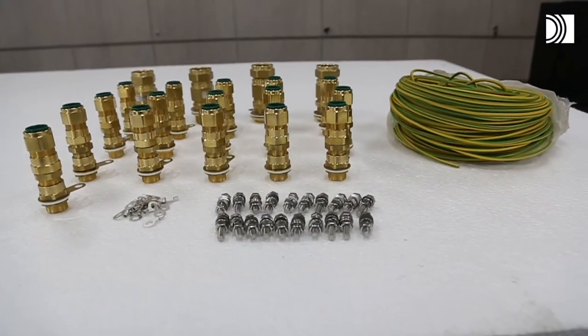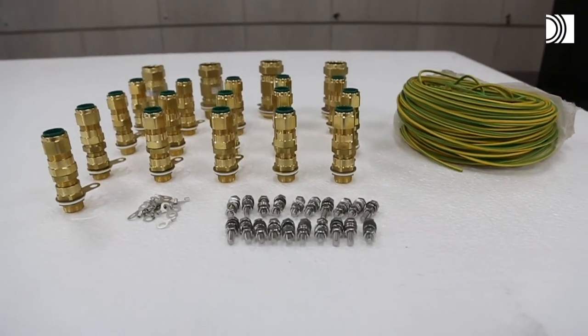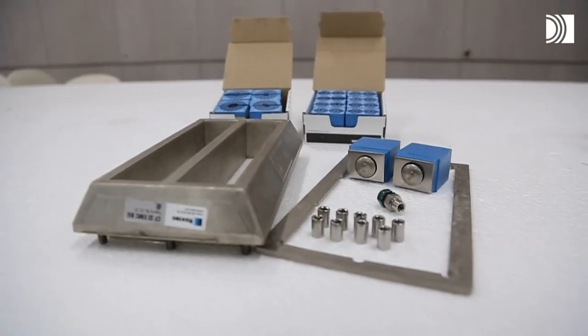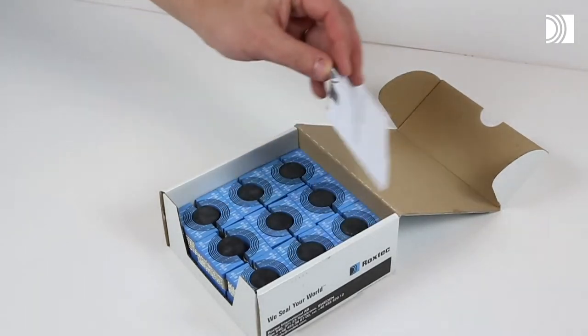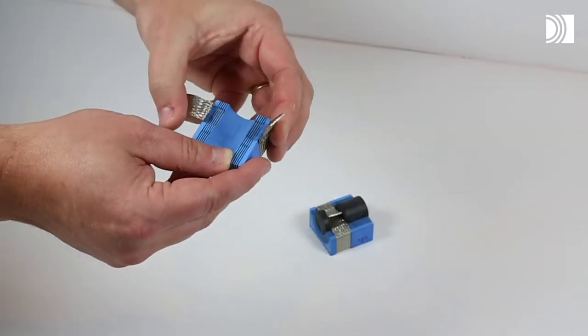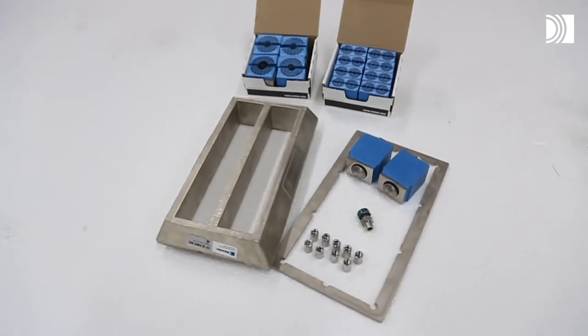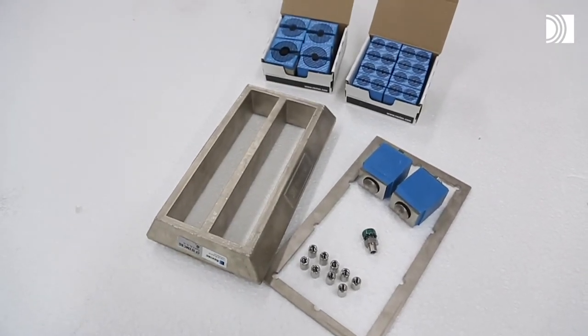A Roxtec BG seal consists of a frame, a counter frame, a couple of adaptable BG sealing modules including a conductive braid and two compression units, plus one screw and nine bolts.